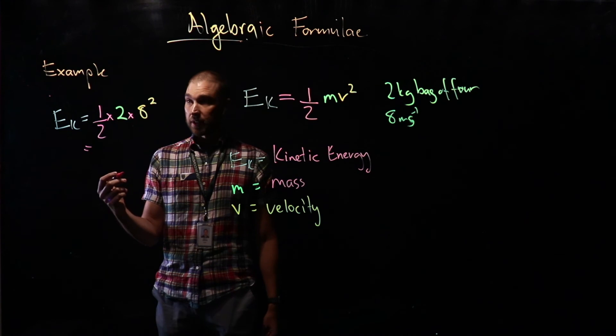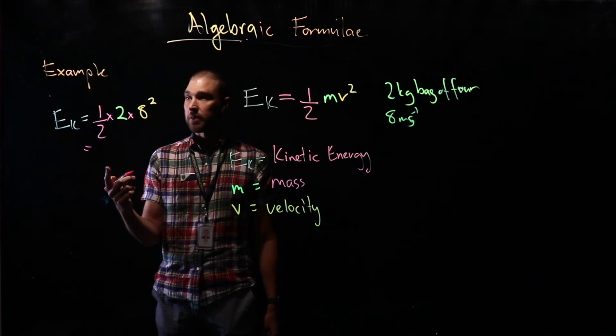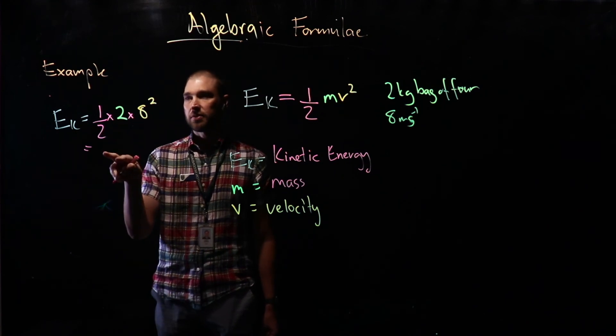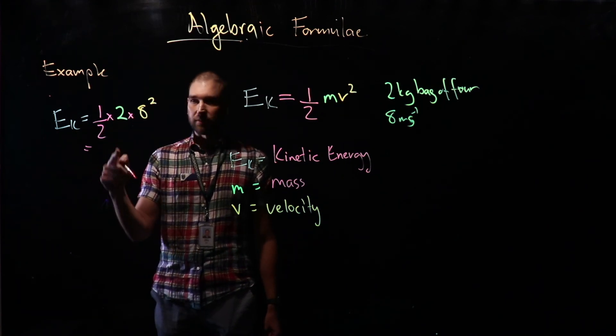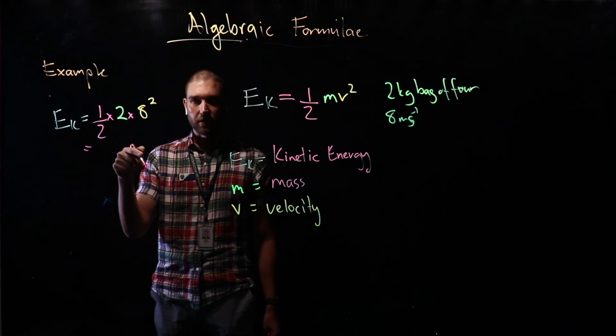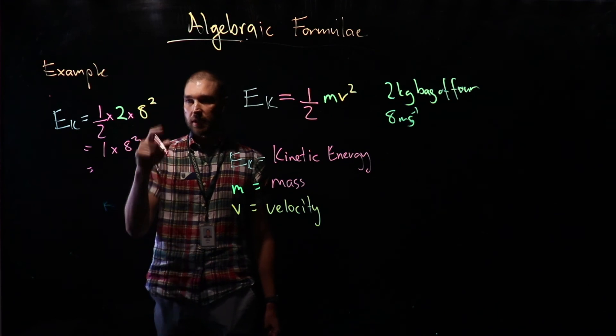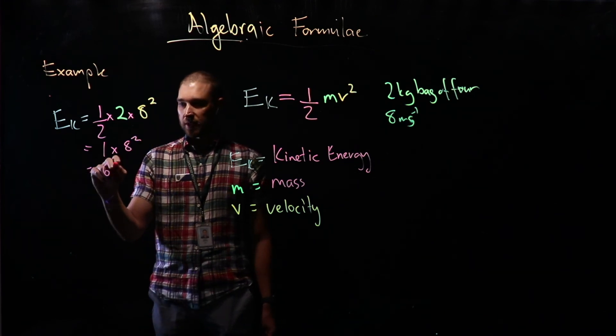From there, we can start to solve, because we've just got numbers that we can work with. Each time we do an equals, we do just one step. Half times 2, that's 1. Two halves make 1. That's the same as saying 1 times 8 squared. 8 squared is 64. So we have 64.